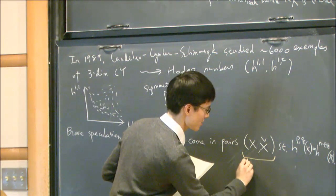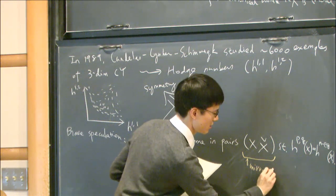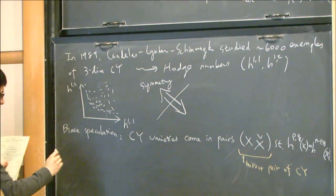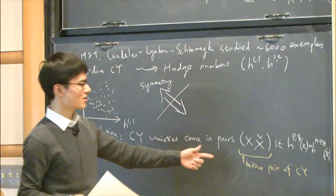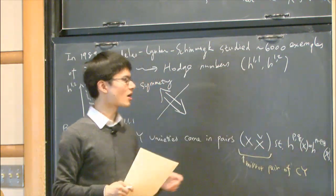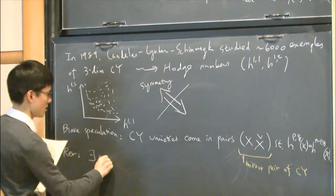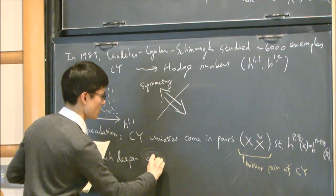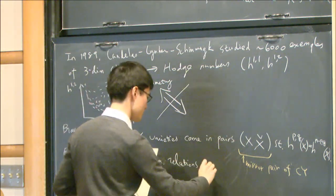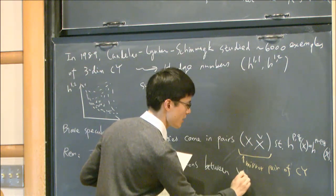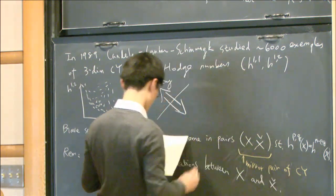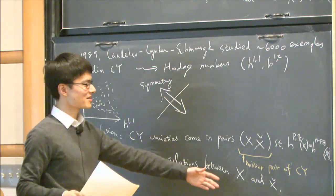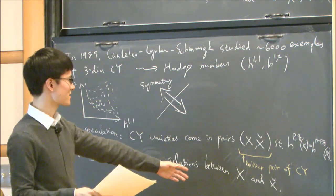We call such pairs a mirror pair of Calabi-Yau varieties. In addition to this relation between Hodge numbers, there exist much deeper geometric relations between mirror pairs X and X̌, involving many subjects such as Fukaya categories, derived categories, Gromov-Witten invariants, and so on.